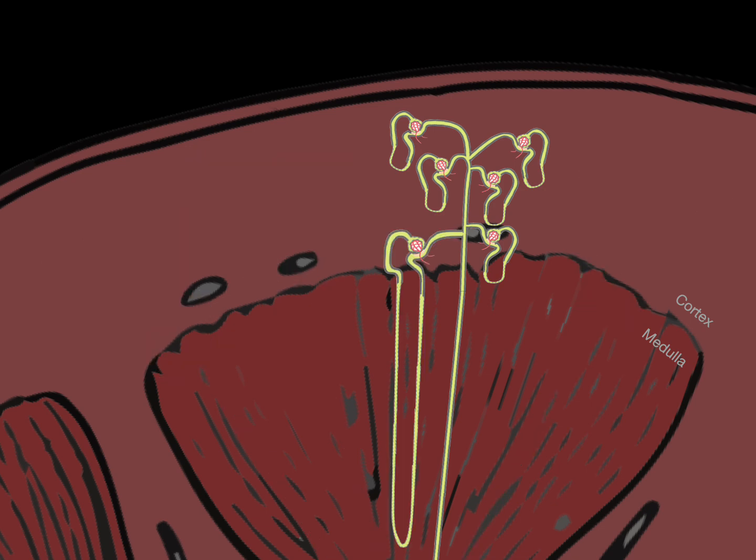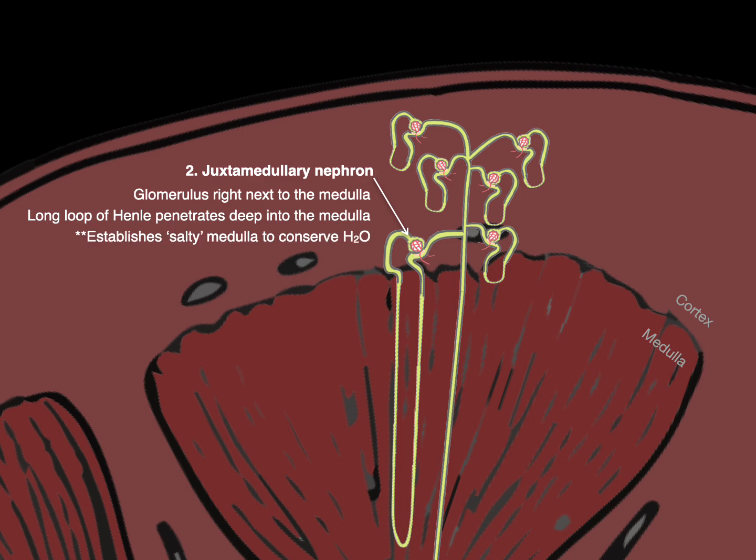Now notice this nephron right there. That's called a juxtamedullary nephron, juxta because the glomerulus is right next to the medulla and they have these long loops of Henle that penetrate deep into the medulla. This is what establishes the salty medulla to conserve water, from 300 milliosmoles near the cortex down to as high as 1200 milliosmoles deeper you go.